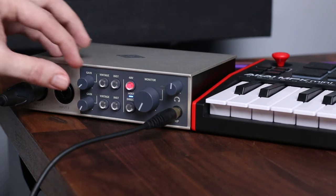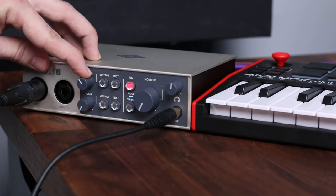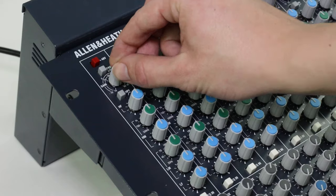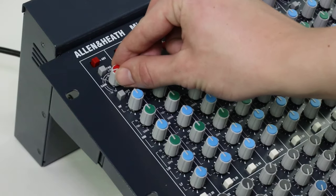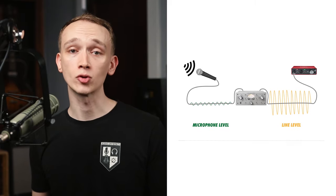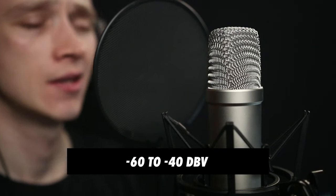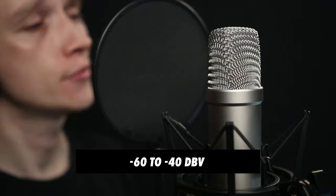A microphone preamp, also known as a mic pre, can be found in almost every recording studio or live sound system. A mic preamp boosts the level of the signal before it's sent to a recording device or mixer, and this is necessary because microphones produce very weak signals, known as mic level, which typically ranges from about minus 60 to minus 40 dBV.